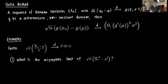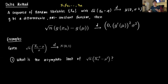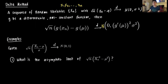Suppose we have a sequence of random variables xₙ — x₁, x₂, up to xₙ — and we know that the expression √n times (xₙ - μ) converges in distribution to a Normal with mean zero and variance σ². If g is a differentiable, non-constant function, then √n times (g(xₙ) - g(μ)) also converges in distribution to a Normal with mean zero and variance (g′(μ))² · σ², where g′(μ) is the first-order derivative. It's best to understand this by going through examples.